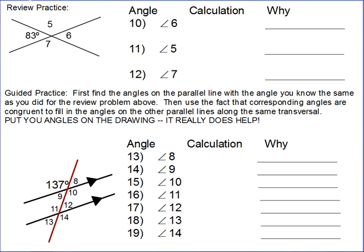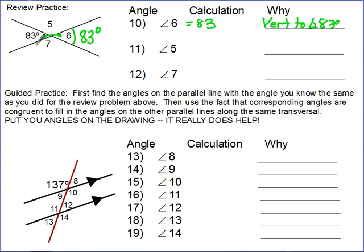Here's a little review practice from the last video. Angle 6 is vertical to the angle that measures 83 degrees, so angle 6 equals 83 degrees — because it's vertical. Now this angle is supplementary to the 83-degree angle, so the calculation is 180 minus 83, which gives us 97 degrees.